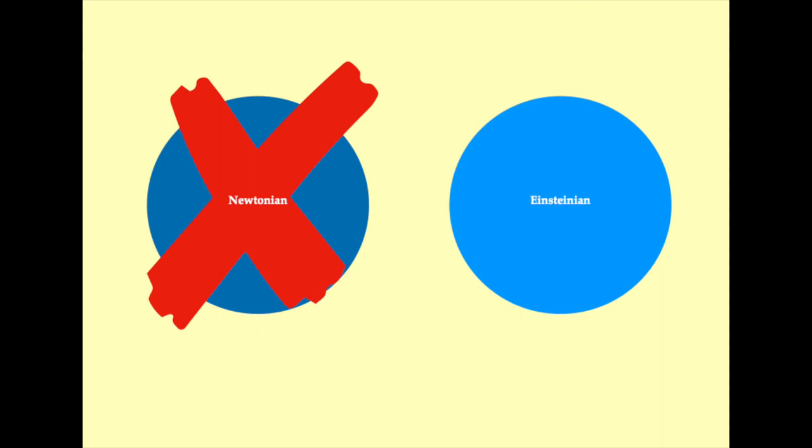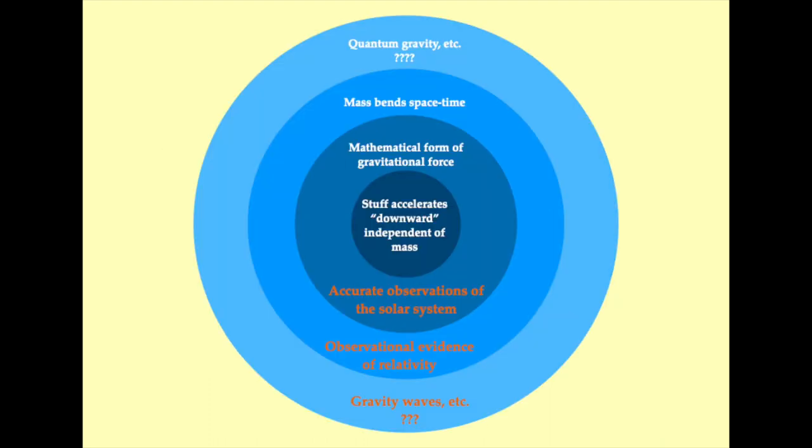When discussing gravity, flat earthers prefer to pretend that science works like this: Einstein was right, therefore Newton was wrong, and Newtonian theory is useless and can be discarded completely. In fact, our understanding of the theory of gravitation has progressed more in accord with the schematic presented in this diagram.